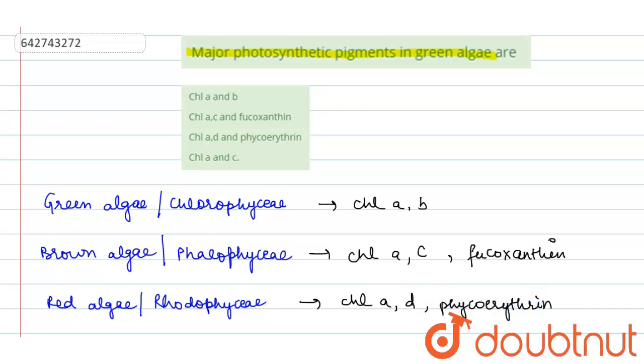So here in the given options, chlorophyll a and b is found in green algae. Chlorophyll a c and fucoxanthine is found in brown algae. Chlorophyll a d and phycoerythrin are found in red algae. And chlorophyll a and c along with fucoxanthine are found in brown algae. So our final answer for this question will be option a: chlorophyll a and b are the photosynthetic pigments in green algae.